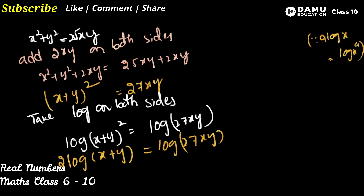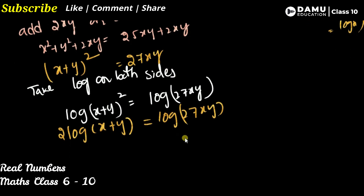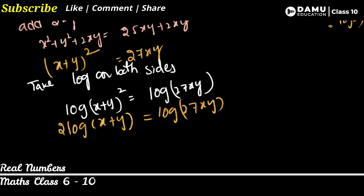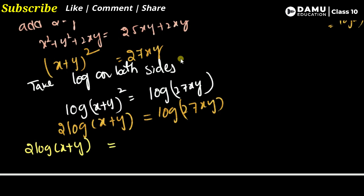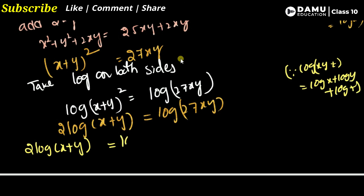The right side is in the format of log(x·y·z). Expanding using log(xyz) = log x + log y + log z: log(27) + log x + log y.